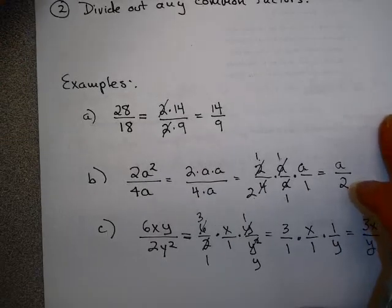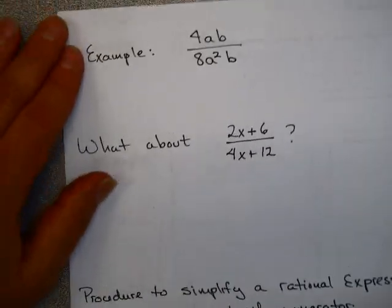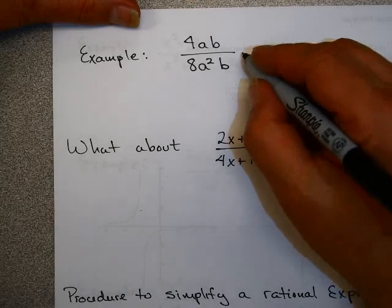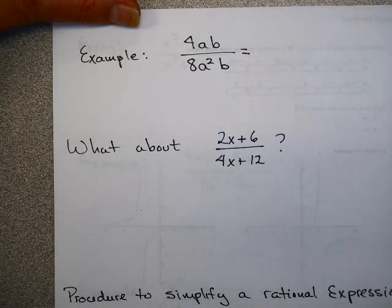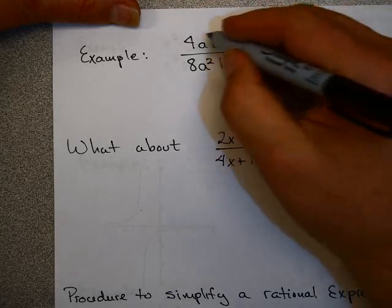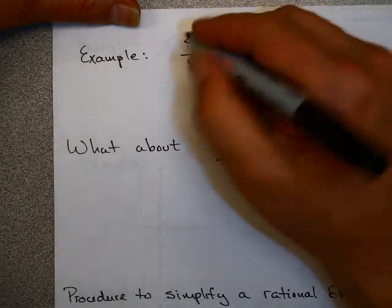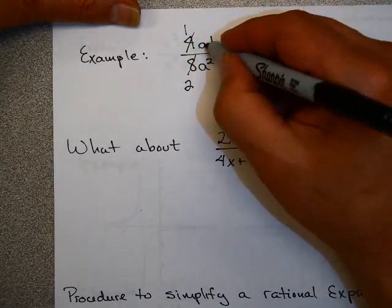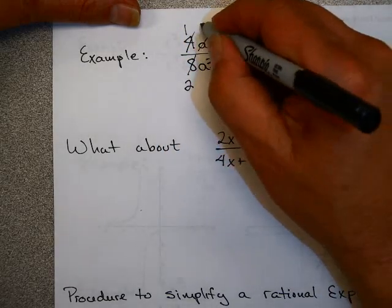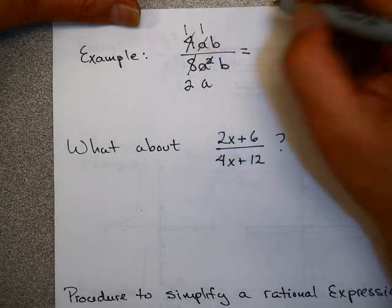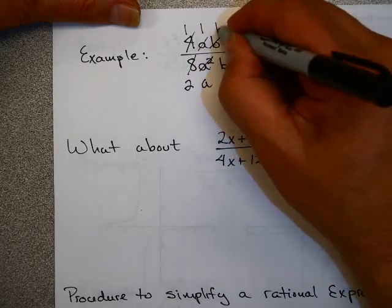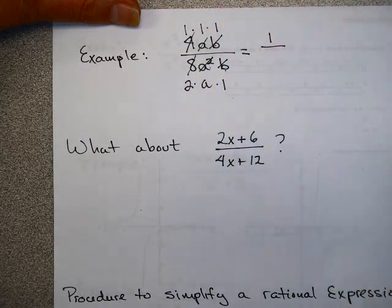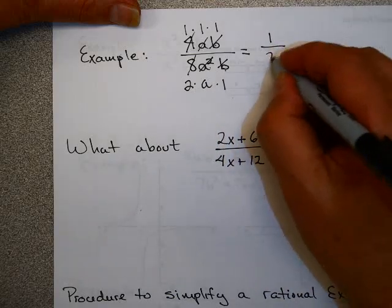Now we're going to get a little harder. Let's look at 4ab over 8a²b. I'm going to take shortcuts: 4 goes into 8 twice, a over a² means a goes into a once and a goes into a² a times, and b over b each goes into that once. So I have 1 times 1 times 1 in the numerator and 2 times a in the denominator — giving 1 over 2a.